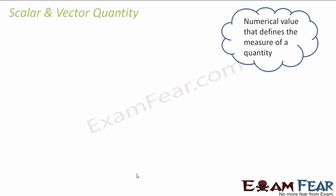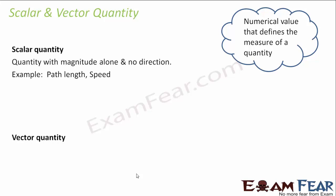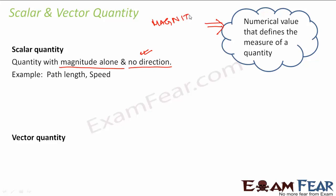Now that we have talked about distance and displacement, talking about scalar and vector quantities becomes necessary, because understanding distance and displacement without scalar and vector quantities is incomplete. A scalar quantity is a quantity with magnitude alone and no direction. Magnitude is a numerical value that defines the measure of a quantity.